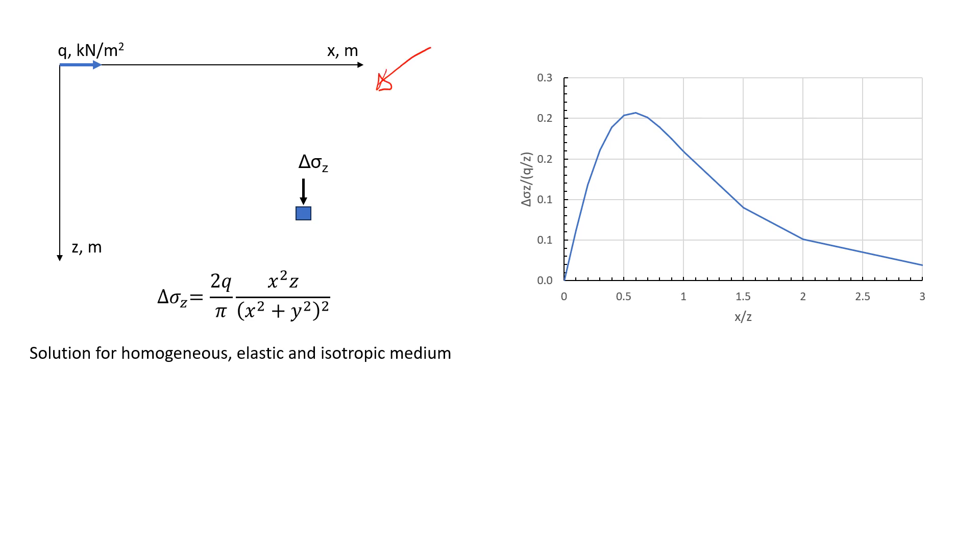So here we have a soil element, and at this point we are going to apply horizontal load. It's kind of a line load, just imagine a brick wall. So we would like to know what is going to be the stress, and this is going to be Q. So let's assume that in this example, Q will be equal to 5 kilonewton per square meters.